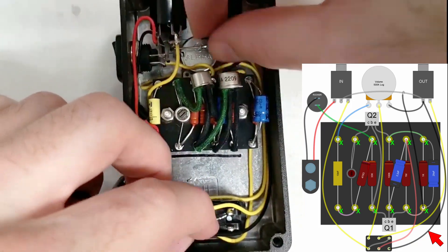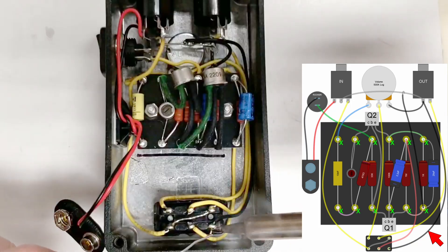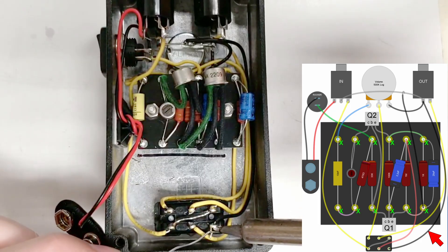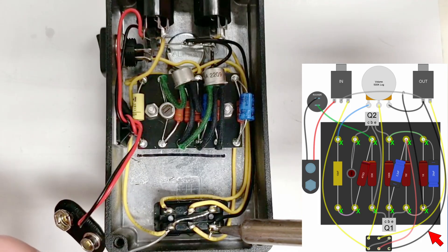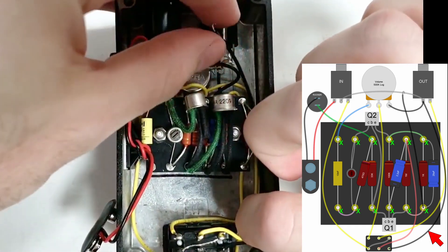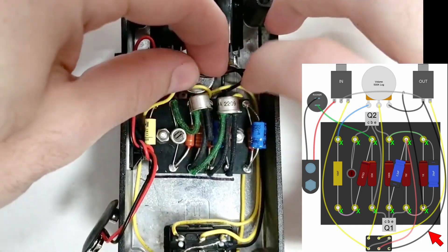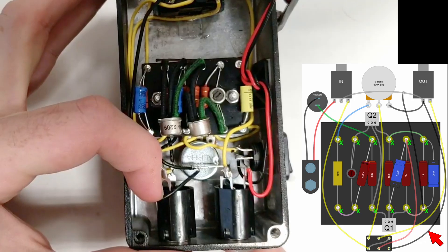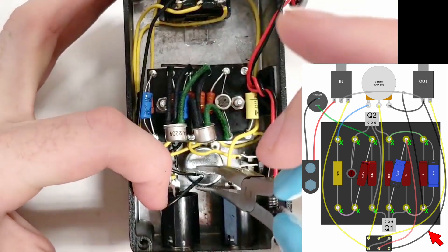The final wire we will install connects one of the foot switch lugs to the ground bus, shorting the effect's input to ground when disengaged. This is not strictly necessary, but it can prevent pops and clicks when the effect is engaged. We'll form a hook at one end of the wire to hook it onto the bus wire, and then pinch it with pliers to secure it for soldering.